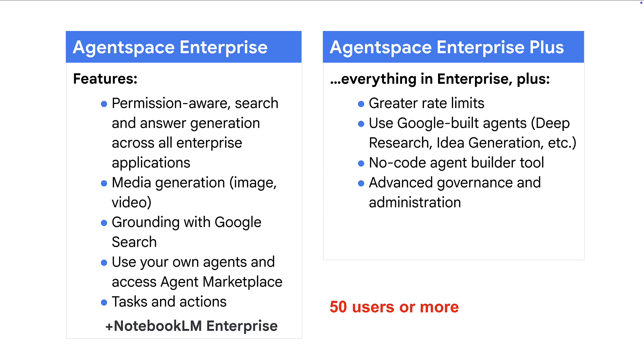It's worth noting that both tiers require 50 users or more. What makes the Google Search Agent really powerful is the fact that it leverages Google's immense knowledge graph.